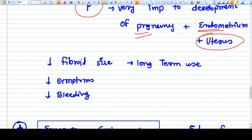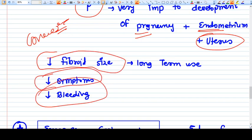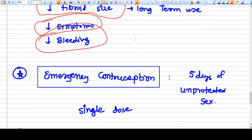So it can be used as a contraceptive method. But with longer use of ulipristal, it will ultimately decrease the fibroid size, symptoms of fibroid, and bleeding. So there are two uses of ulipristal acetate.